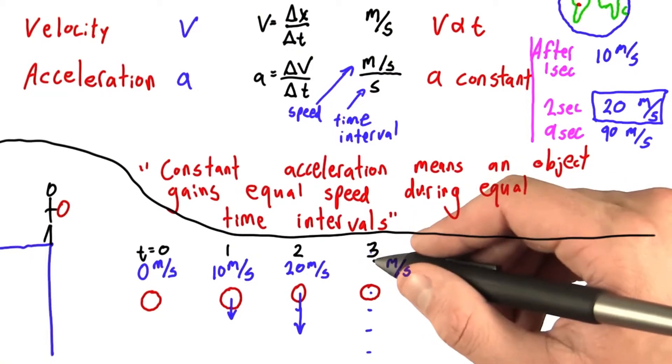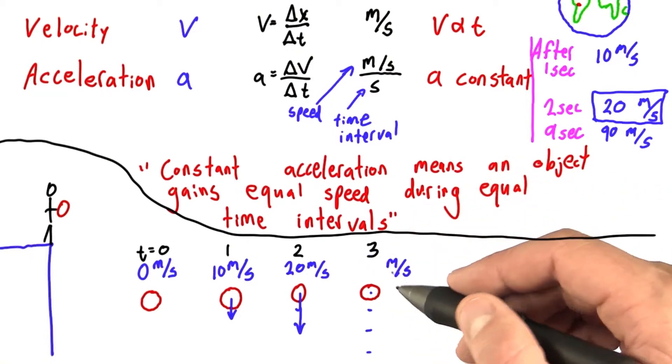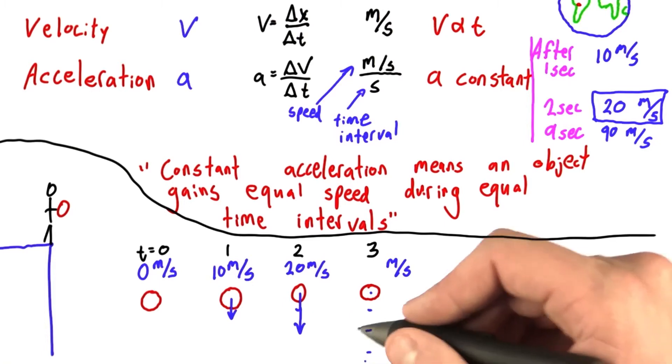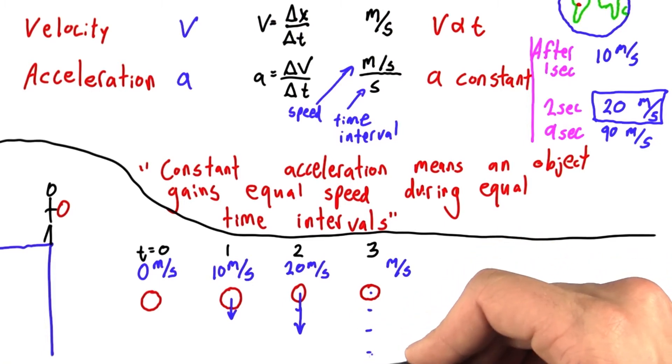I want you to tell me two things about what happens after three seconds. First, the speed, and second, where should I put the end of this arrow, which represents that speed? Should I put it here, here, here, or here?